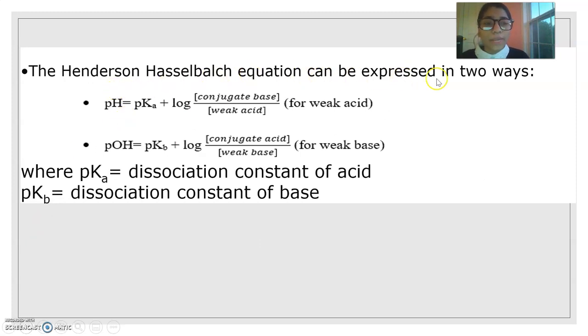The Henderson-Hasselbalch equation can be expressed in two ways: pH = pKa + log(conjugate base/weak acid) for weak acid, and pOH = pKb + log(conjugate acid/weak base) for weak base, where pKa is the dissociation constant of acid and pKb is the dissociation constant of base.